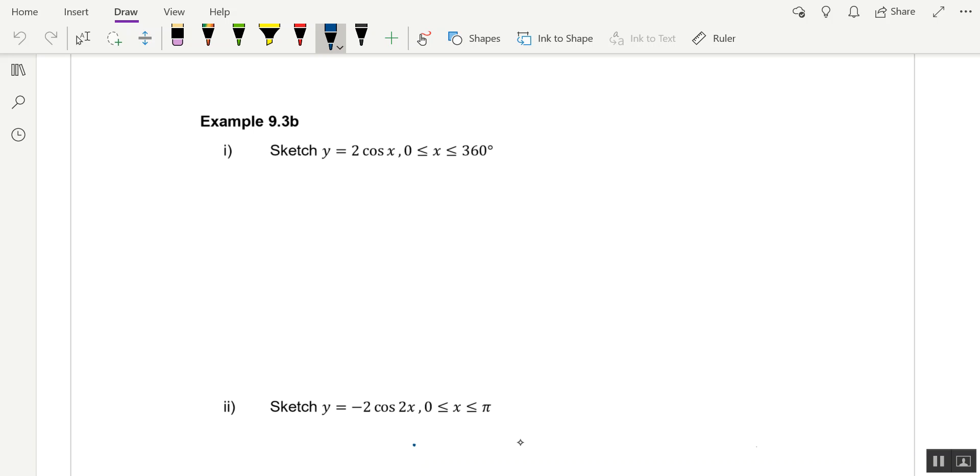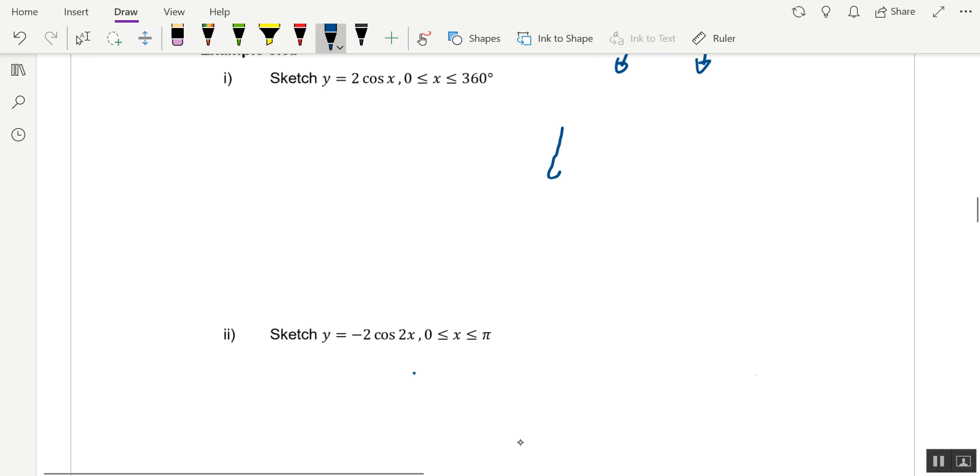The next kind of graph we are going to look at is variations of the cosine graph, still using y equals a cos bx. Find your a and find your b. In this case, y equals 2 cos x, your a is equals to 2, your b is equals to 1.